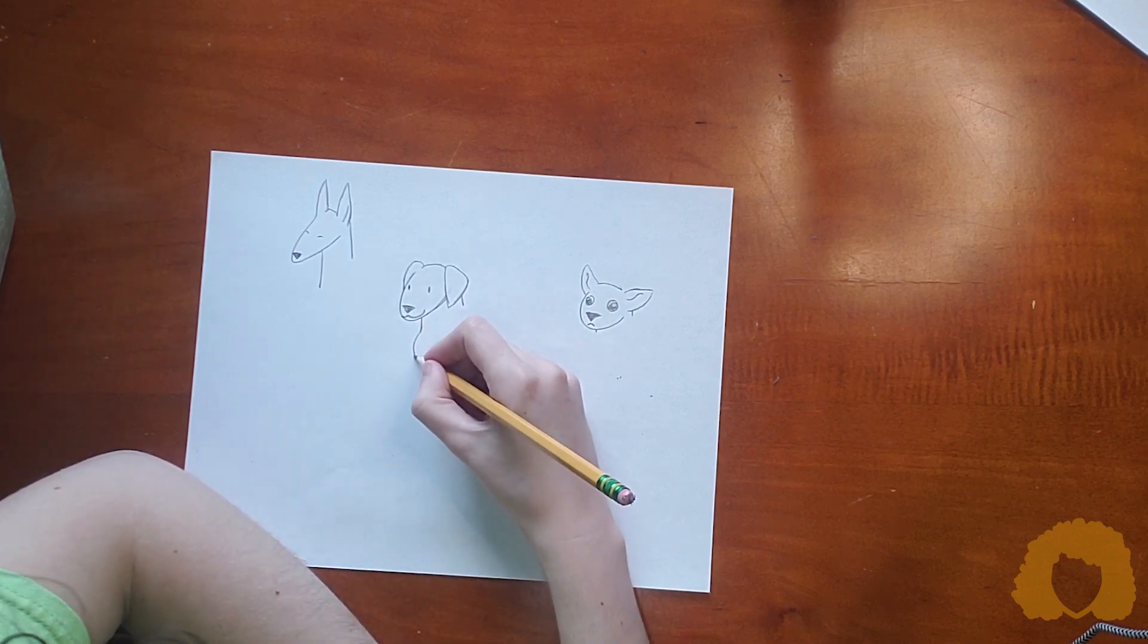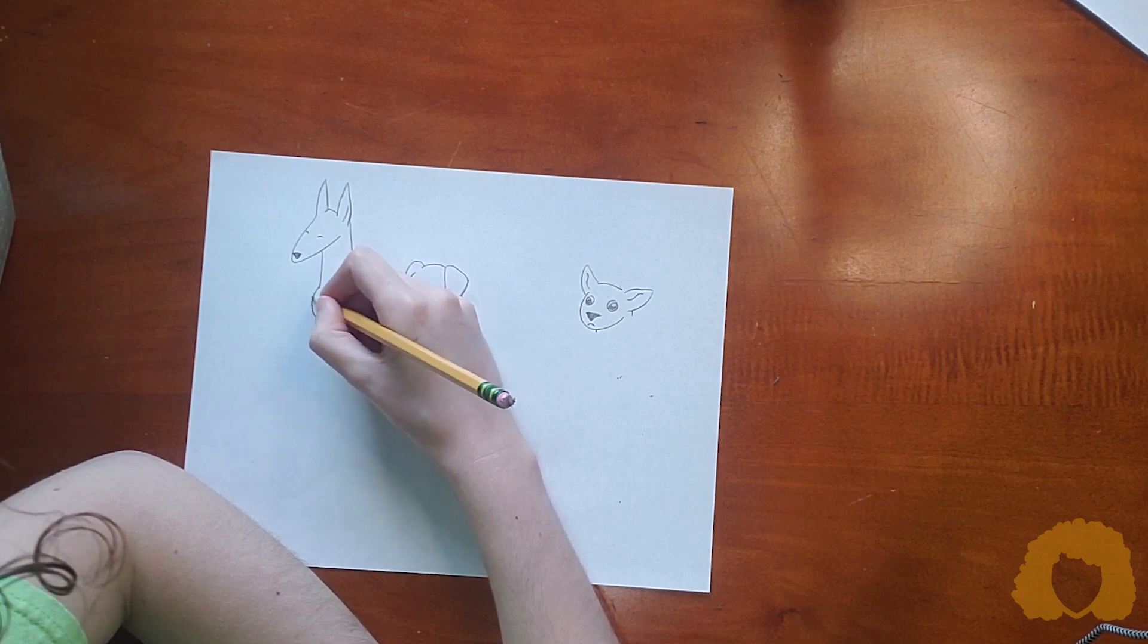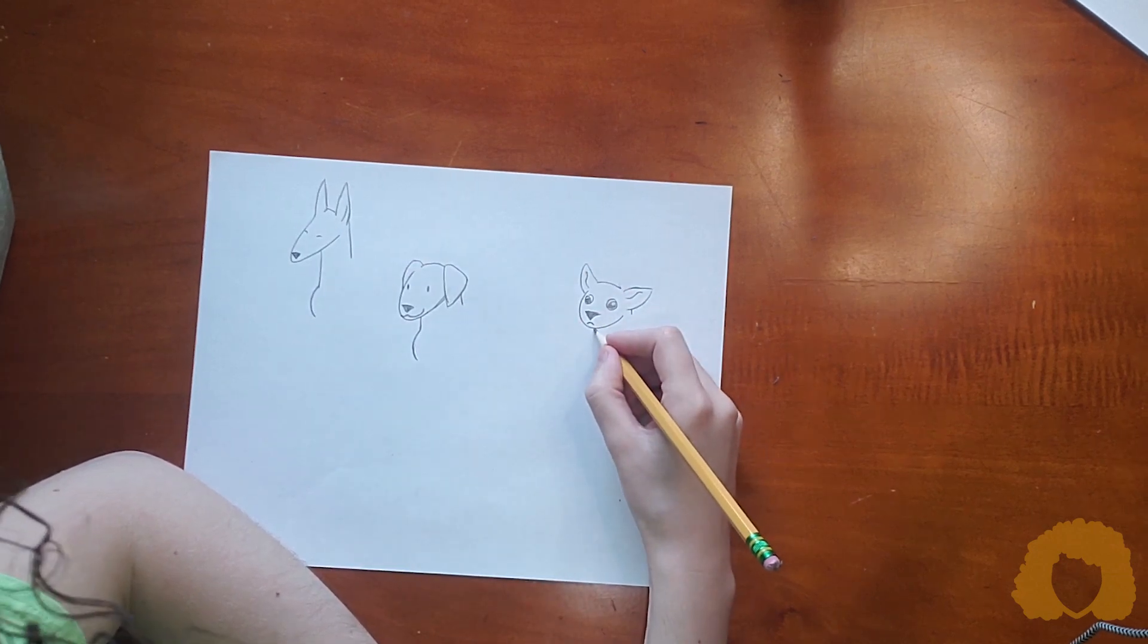Then you're going to draw a soft curve, a soft C for the shoulder.